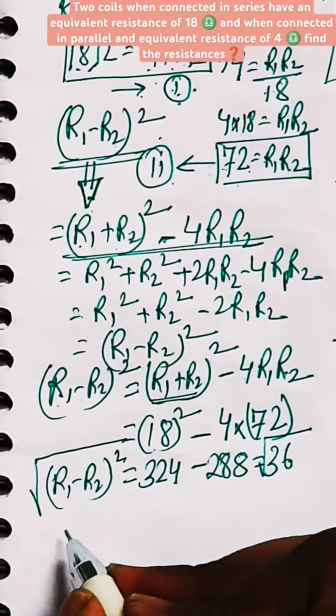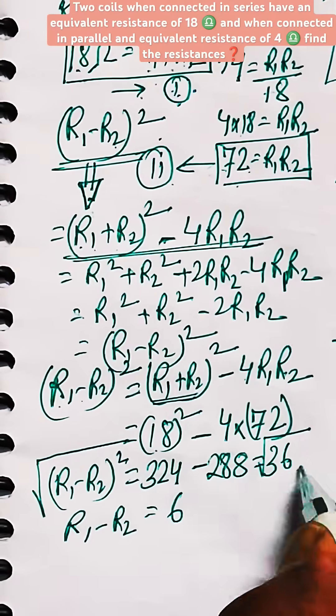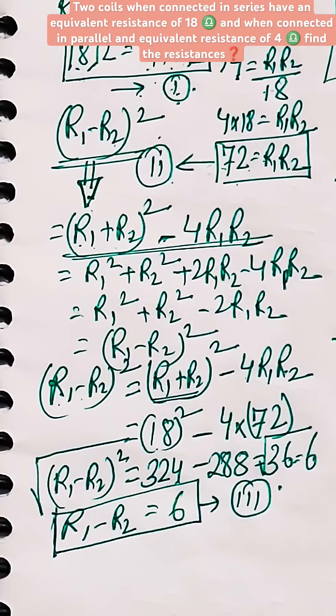So R1 minus R2 whole square is coming as 36. Take square root on both sides to get the value of R1 minus R2 as 6. Let's say this is equation number 3.